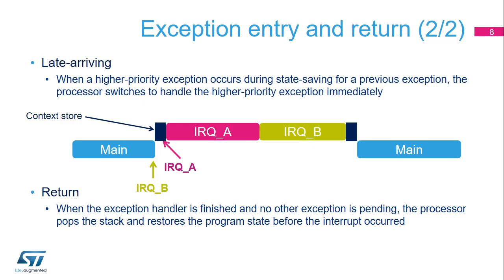When an interrupt arrives, the processor first saves the program context before executing the interrupt handler. If the processor is performing this context-saving operation when an interrupt of higher priority arrives, the processor switches directly to handling the higher priority interrupt when it's finished saving the program context. Then tail-chaining will be used prior to executing the IRQ interrupt service routine. When all of the exception handlers have been run and no other exception is pending, the processor restores the previous context from the stack and returns to normal application execution.